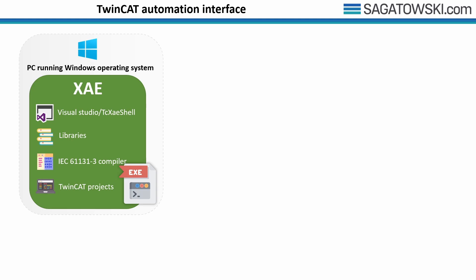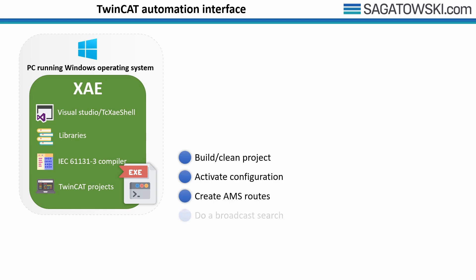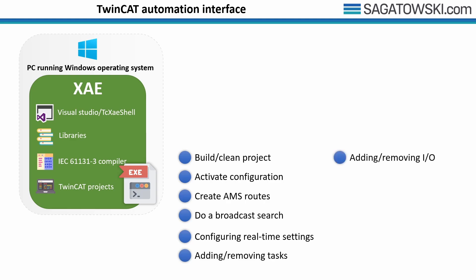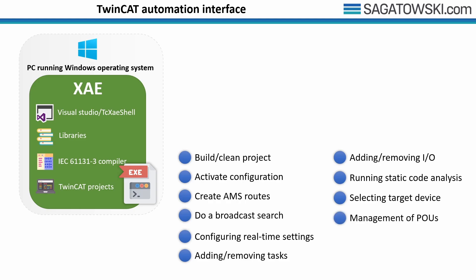Let's first look at the different things we usually do in the TwinCAT XAE, the integrated development environment for TwinCAT software. A few things you normally do in TwinCAT XAE include: building and cleaning a project, activating the configuration, creating AMS routes, doing a broadcast search, configuring real-time settings, adding and removing tasks, adding and removing inputs and outputs, running the static code analyzer, selecting the target device, and management of POUs and libraries.